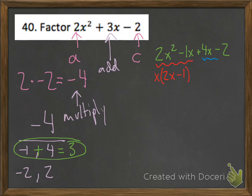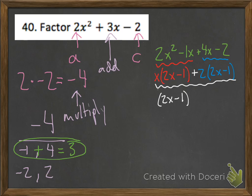For the second pair, 4x minus 2, they both have a 2 in common. When I pull the 2 out, I'm left with 2 times the quantity 2x minus 1. I now have two terms being added together and I do greatest common factor one more time. Both terms share the factor 2x minus 1. Pulling that out, what remains is x from the first term and 2 from the second. So my final answer is 2x minus 1 times x plus 2.